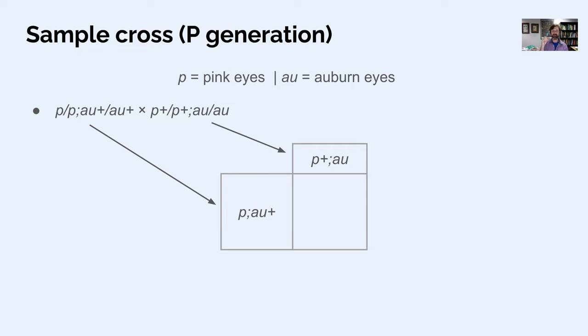The auburn gene is au plus slash au. There's at least one au plus. That means not auburn. So if the fly is not pink-eyed and not auburn-eyed, then it sort of defaults back to wild type. So those plus alleles are dominant, and they give the wild type eye colors at the pink gene and at the auburn gene.